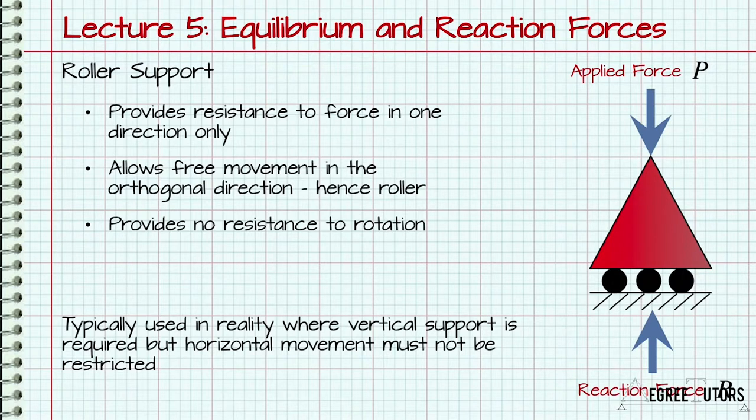For example, steel bridges can expand in the heat of the sun. This expansion of the steel can cause the bridge to get slightly longer during the day before contracting again in the cooler night time temperatures. If this thermal movement is restricted, additional stresses will build up within the structure. To overcome this, engineers often use roller supports at one end of the bridge, allowing it to move as the bridge expands and contracts.